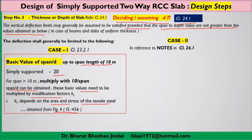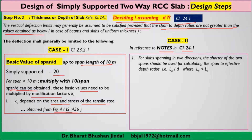With reference to Clause 24.1, for slabs spanning in two directions (two-way slabs), the notes state that the shorter of the two spans should be used for calculating the span-to-depth ratio. Therefore, when calculating the LX/D ratio, LX should always be the shorter span. The shorter span is designated LX and the longer span LY.